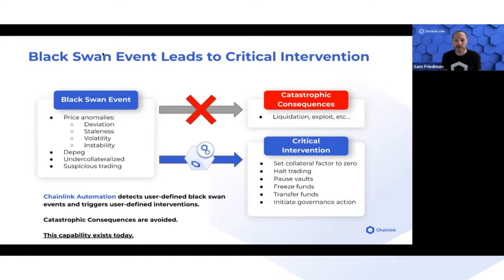It might be halting or slowing down trading in a DEX, pausing one particular vault or a number of vaults exposed to a particular asset that de-pegged — or anything else the user decides. Without this, someone would need to manually monitor and then wait for manual intervention.